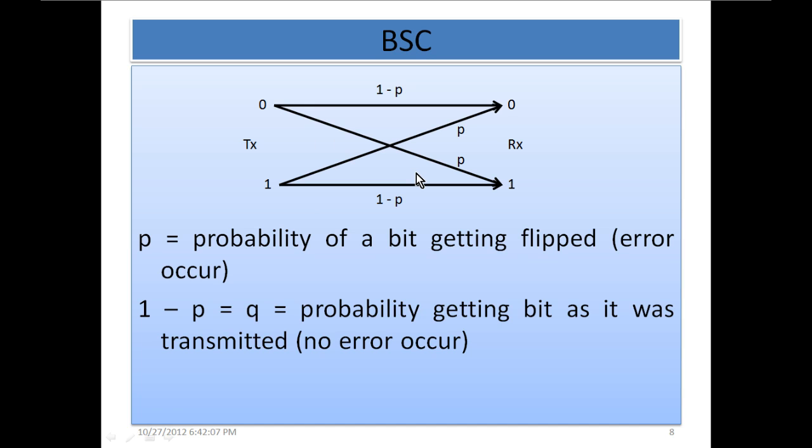Here what we are saying is that the success is the chances of error. The error is P. Probability of a bit getting flipped, error occurred, is P. But if no error occurs is 1-P which is failure. In this case 0 was transmitted and 0 is received. This is also true for 1.